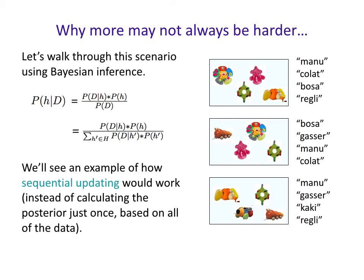Let's walk through the scenario where more objects in a single scene is not always harder for cross-situational learning. We'll use Bayesian inference to implement the intuition of how, when you see scenes one at a time and build up information, you can disambiguate and figure out what, for example, 'Manu' actually refers to across all of these scenes. We'll use what's called sequential updating for Bayesian inference.